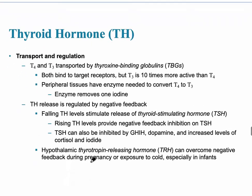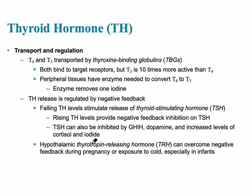For thyroid hormone transport and regulation: T4 and T3 are transported by thyroxin-binding globulin — they are not free in the blood but attached to these proteins. At peripheral tissues, an enzyme converts T4 to T3.